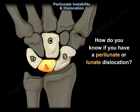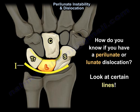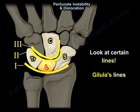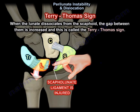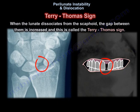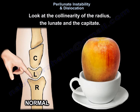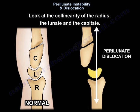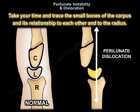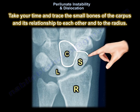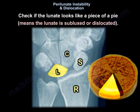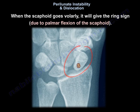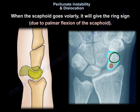To identify a perilunate or lunate dislocation, you look at certain lines. You look at Gilula lines and the Terry Thomas sign, which is the gap between the scaphoid and the lunate. You look at the collinearity of the radius, the lunate, and the capitate. Take your time and trace the small bones of the carpus and their relationships to each other and to the radius. Check if the lunate looks triangular, like a piece of pie — that means subluxed or dislocated. When the scaphoid goes volarly, it will give the ring sign due to palmar flexion of the scaphoid.